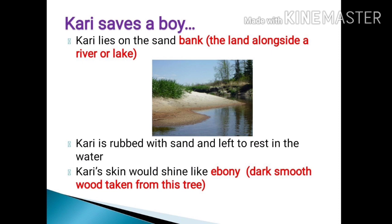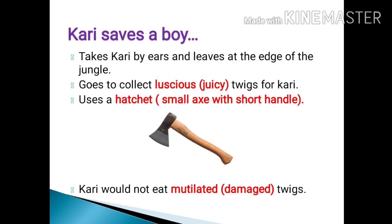After that, Kari would play and rest in the water. When Kari emerged out of the water, his skin would shine like ebony. Ebony is a type of tree, and here it refers to Kari's dark and smooth skin. After this, Gopal would take Kari by his ears and leave him at the edge of the jungle so that Gopal could go and collect some leaves for Kari to eat.